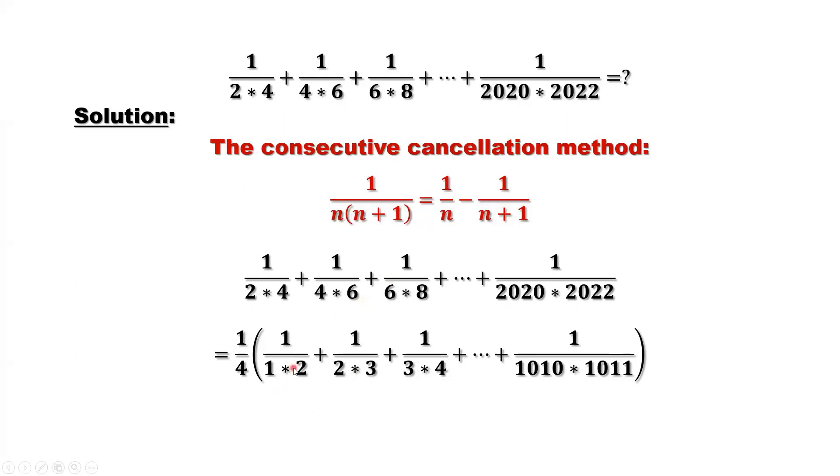Check each term. The denominator for the first term is 1 times 2. For the second is 2 times 3. The third is 3 times 4. The last one is 10, 10 times 10, 11.